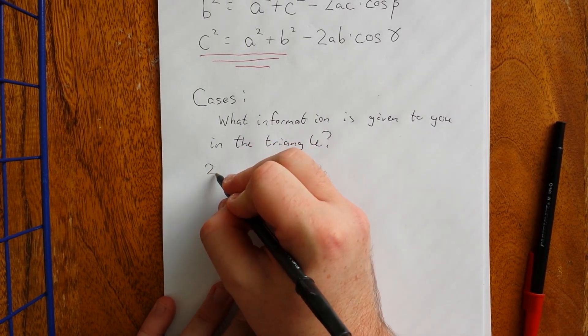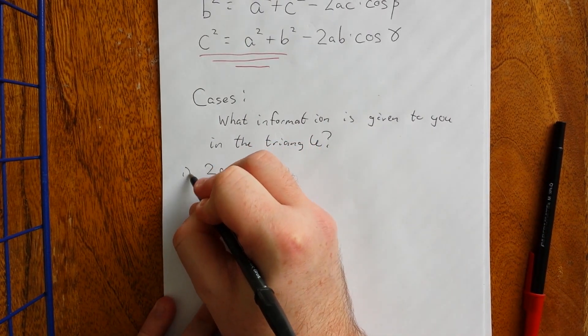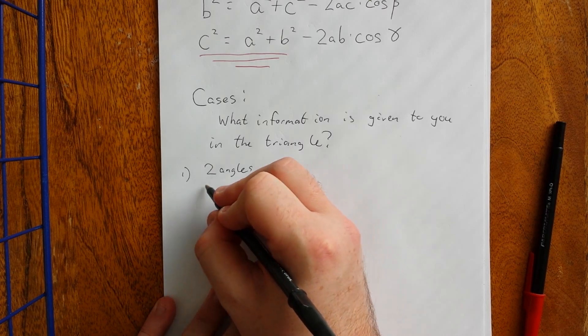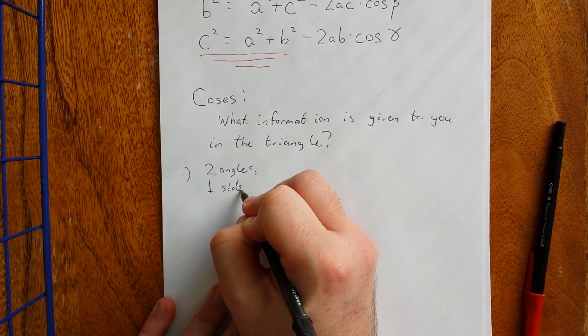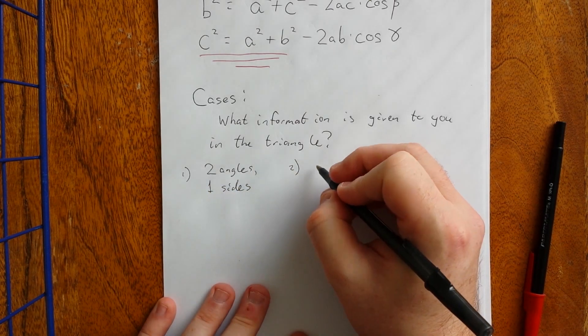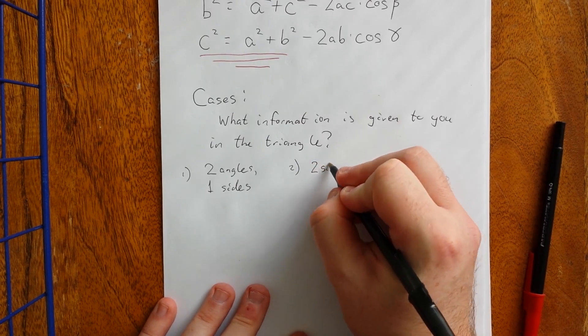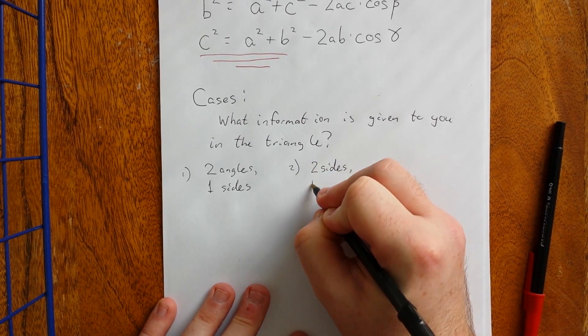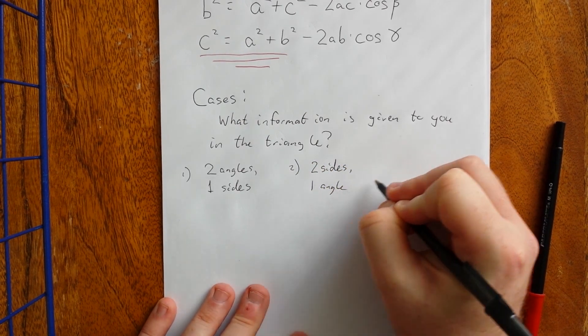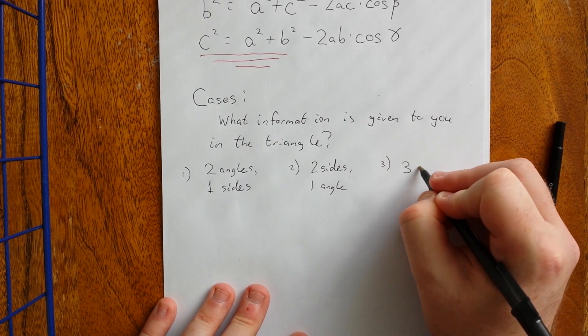So there are a couple of different possibilities. One possibility is we could have two angles and one side. Another possibility is that I could give you two sides, one angle. And the third possibility is I could give you three sides.